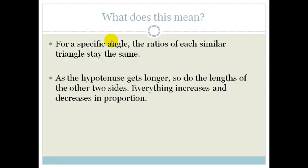So, for a specific angle, the ratios of each specific triangle remain the same. So, as the hypotenuse goes longer, so do the lengths of the other two, and everything increases or decreases in proportion.